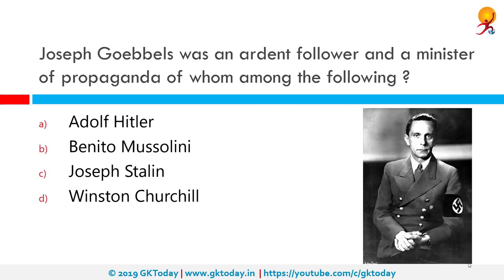Joseph Goebbels was an ardent follower and minister of propaganda of which of the following? The correct answer is Adolf Hitler. Paul Joseph Goebbels was a German Nazi politician and Reich Minister of Propaganda of Nazi Germany from 1933 to 1945. He was one of Adolf Hitler's closest associates, known for his skills in public speaking and his deeply virulent antisemitism.